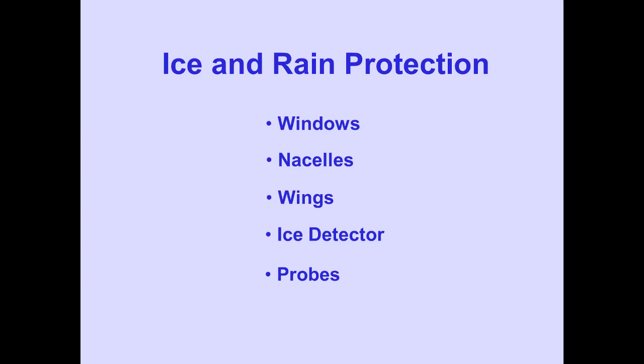In this module, we will discuss the ice and rain protection systems, including windows, nacelles, wings, ice detector, and probes.